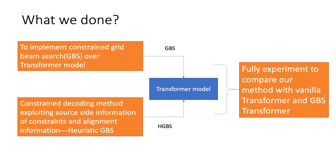Based on the above ideas, we first investigate the feasibility and effectiveness of performing constraint decoding using Grid Beam Search in the transformer model. We then developed a simple but effective lexically constrained decoding strategy for transformer, which is a source-informed heuristic method to reduce the beam search space of the Grid Beam Search. We call our method Heuristic Grid Beam Search. It uses the attention information from the multi-head attention as reference to place constraints at each step. We also conduct full experiments to compare our method with vanilla transformer and Grid Beam Search transformer.